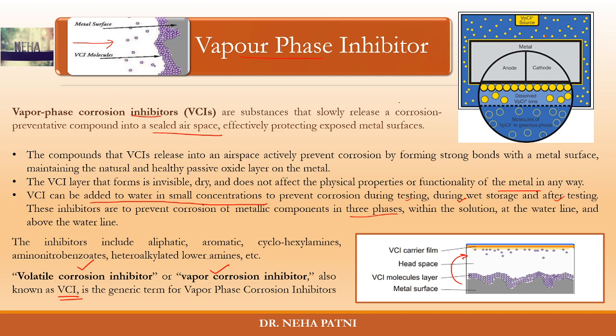In summary, VCI — vapor phase corrosion inhibitor — is a corrosion inhibitor in vapor phase. The vapor phase compound is released into the sealed air space just above the metal, so the VCI compound gets coated onto the metal surface. It occupies the surface, makes a bond with the metal, and forms a passive oxide layer. Since the layer is passive, the metal is no longer active and will not corrode. This layer also does not affect the metal or hinder its properties in any way.